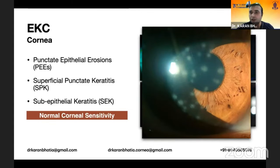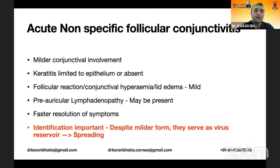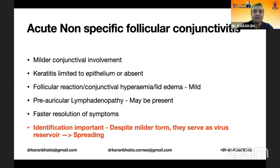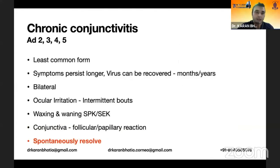One important thing to remember is that these patients have normal corneal sensitivity, in contrast to HSV infection. The next variety is nonspecific follicular conjunctivitis, which is a milder involvement. Its identification is still important because these patients carry the virus and can spread the disease. Chronic conjunctivitis is caused by adenovirus 2, 3, 4, and 5; it is the least common and generally resolves spontaneously.